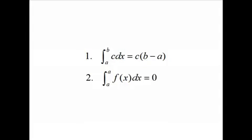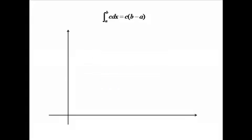We're gonna take a quick look at why these two theorems hold true. So let's look at the first one. This says that the integral from a to b of some constant c is equal to c times b minus a.